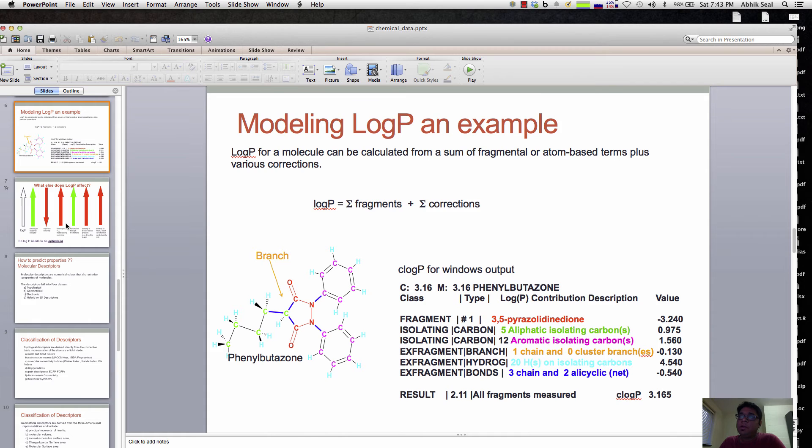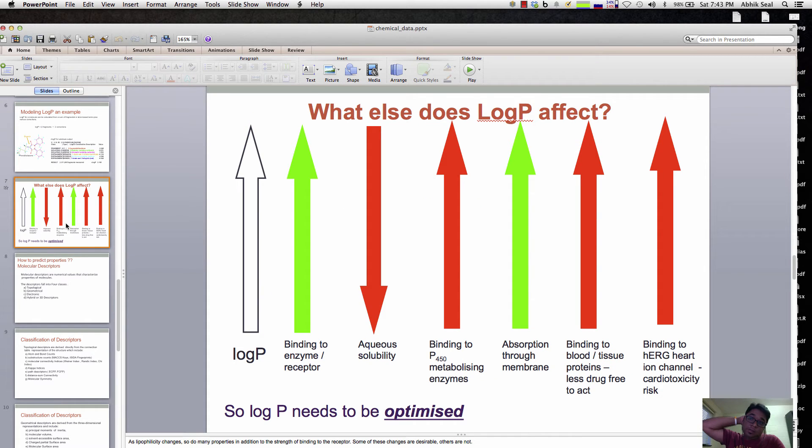Why do we consider log P and what does it affect? This is a very important graph. If you increase the log P of a compound, it indicates the binding to the enzyme and receptor will increase, whereas aqueous solubility decreases. Binding to the CYP450 metabolism enzymes increases, absorption through the membrane increases, binding to blood, tissue, and proteins increases, and the hERG cardiotoxicity risk also increases. So you cannot increase log P too much because it will increase binding to hERG proteins, which causes cardiotoxicity.